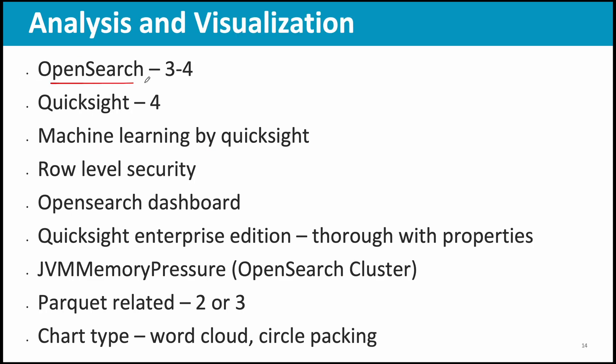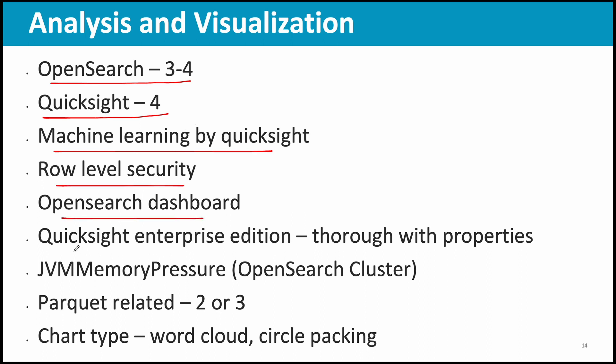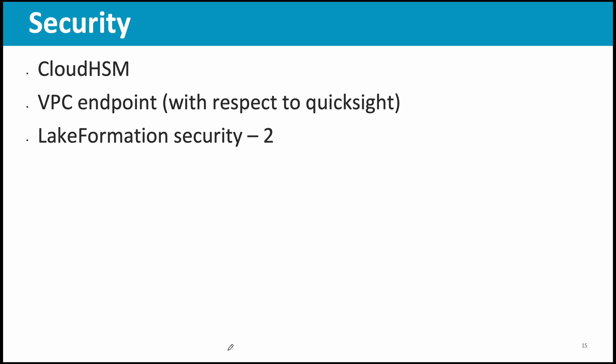In analysis and visualization: OpenSearch had three to four questions, QuickSight had four questions, machine learning by QuickSight had one question, row-level security and OpenSearch dashboard were covered. Be thorough with the properties of QuickSight Enterprise Edition. JVM memory pressure related to OpenSearch clusters had a question. Parquet format: two or three questions. Visualization chart types such as word cloud and circle packing: one question. For security: CloudHSM had a question, VPC endpoint was covered, and Lake Formation security had a couple of questions. These are all the key topic areas from where I got questions — ensure you know all these topics very well.